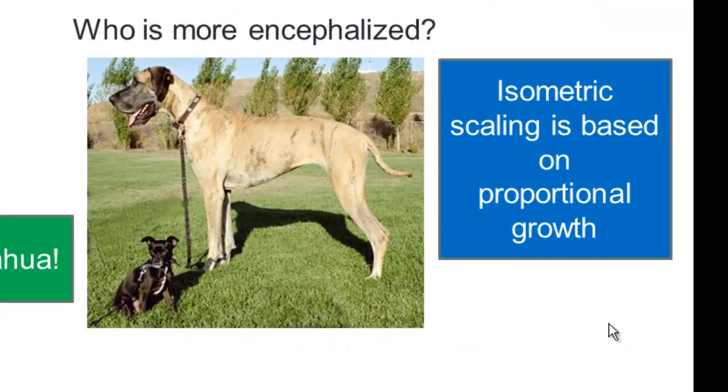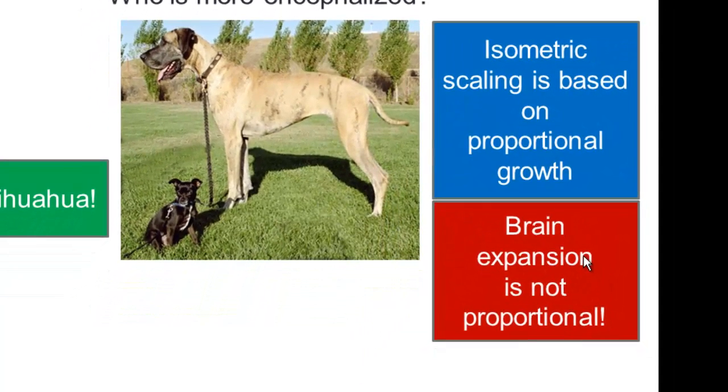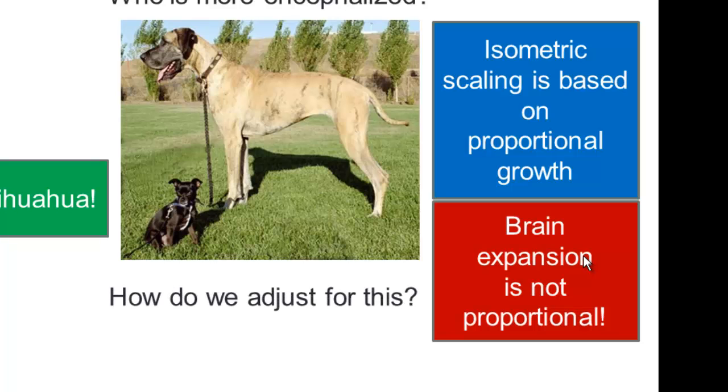So isometric scaling is based on proportional growth. It's based on the expectation that brain size will change in step with body size. But in fact, this isn't what we observe. So brain expansion does not move in proportion to body size. And therefore, we've got to adjust our measure. We can't use isometric scaling. So how do we adjust for this?